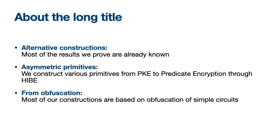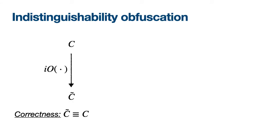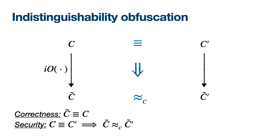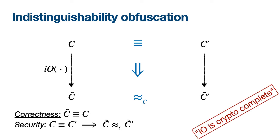I'll start by explaining what obfuscation is. In the paper we use indistinguishability obfuscation (IO), a primitive that transforms a circuit C into a new circuit C-tilde, the obfuscated circuit, that is functionally equivalent to the original. The security property is that if you start with two functionally equivalent circuits C and C', their obfuscations are computationally indistinguishable. IO is said to be crypto-complete: if you have IO, you can build almost all cryptography assuming only one-way functions. Our results follow this line of work.